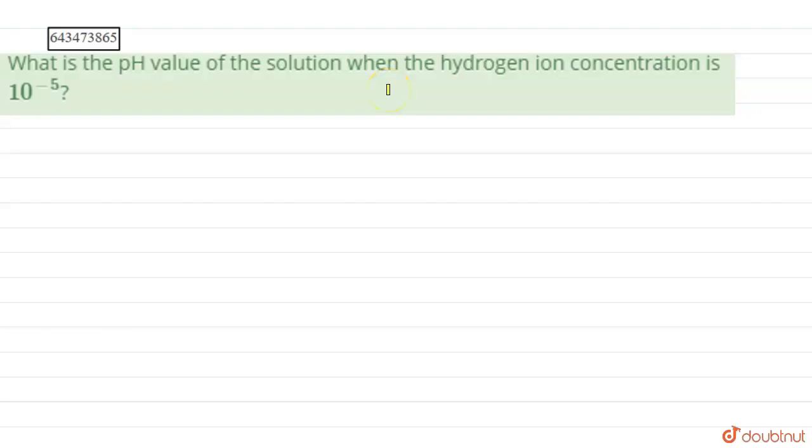We need to calculate the pH value of the solution when the hydrogen ion concentration is 10 raised to the power minus 5.